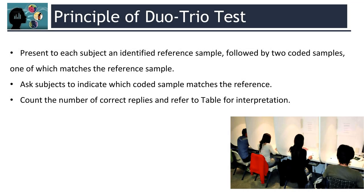When we do the Duo-Trio test, you should present to each subject an identified reference sample followed by two coded samples, one of which matches the reference sample. Then, the subject is required to indicate which coded sample matches the reference. Then, count the number of correct replies and refer to the table for interpretation.